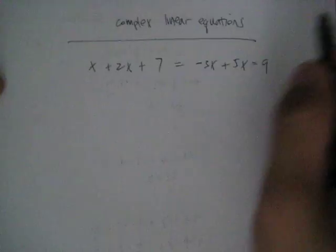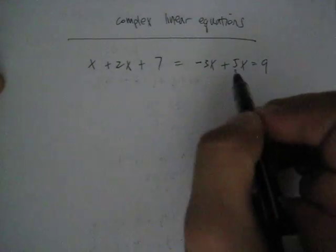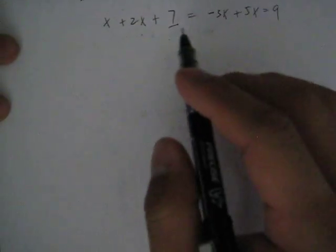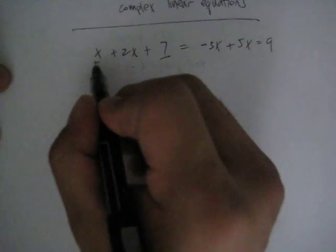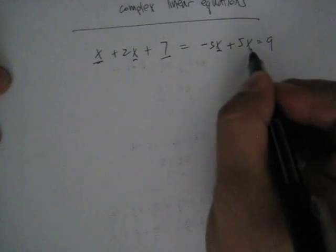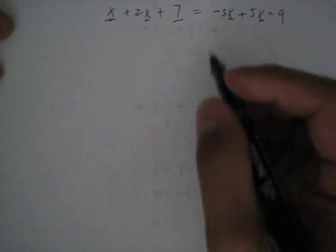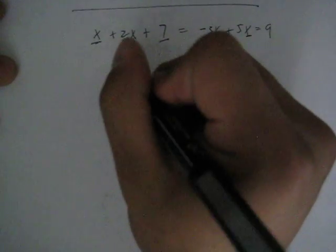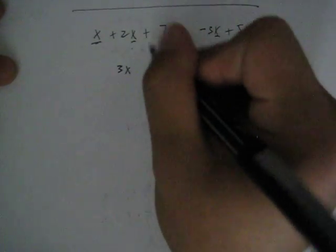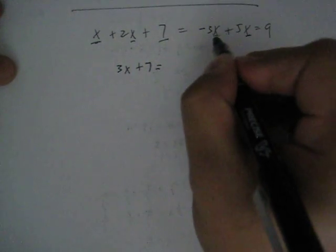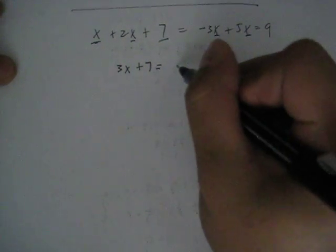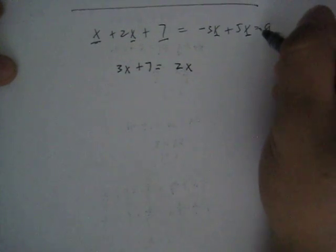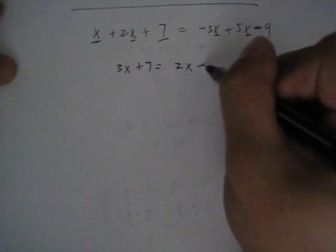On both sides of the equation, we have variables and numbers. In order to find the value of x, we'll basically just group them together. x + 2x equals 3x, so 3x + 7 = -3x + 5x, which is 2x, minus 9.